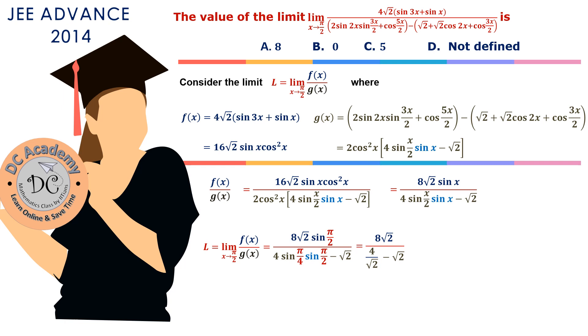So sin(π/2) = 1, sin(π/4) = 1/√2. If we do the step-by-step arithmetic calculation, we get the limit as 8. And that's why for this particular problem, option A is the limiting value of the given function.